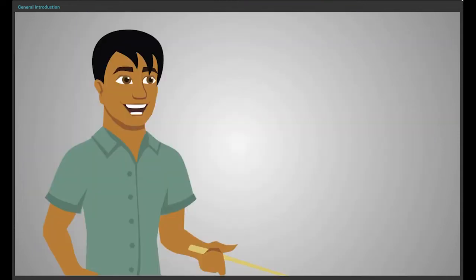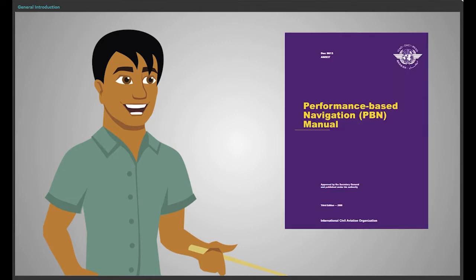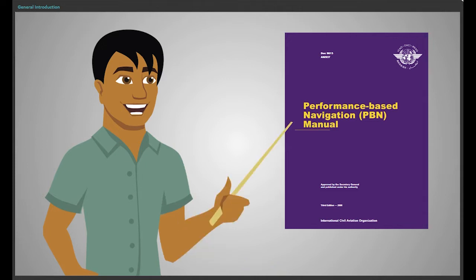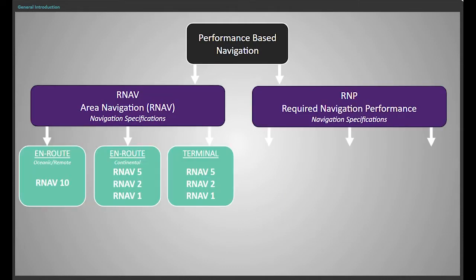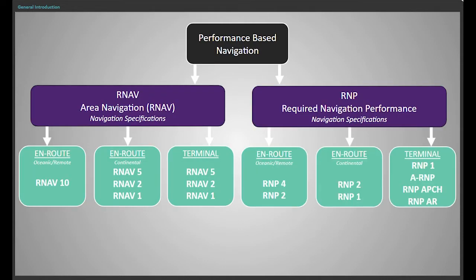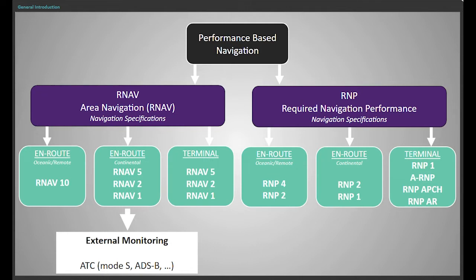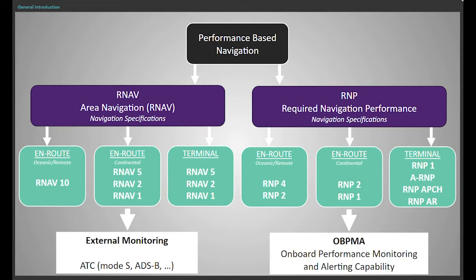ICAO published Document 9613, the Performance-Based Navigation Manual. This manual identifies RNAV and RNP navigation specifications within an airspace concept. To simplify, the major difference between RNAV and RNP operations is that for RNP, an onboard performance monitoring and alerting system is required.